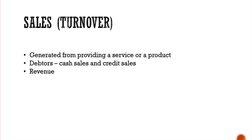It's the same with a product. Some businesses don't provide services — they provide products. The local supermarket is selling products, the electrical store is selling products, Amazon is selling products. They're not providing a service; they're selling something, usually physical, that you exchange for your cash. That's how these businesses make money and get their sales — through selling a product to other businesses or to the general public.